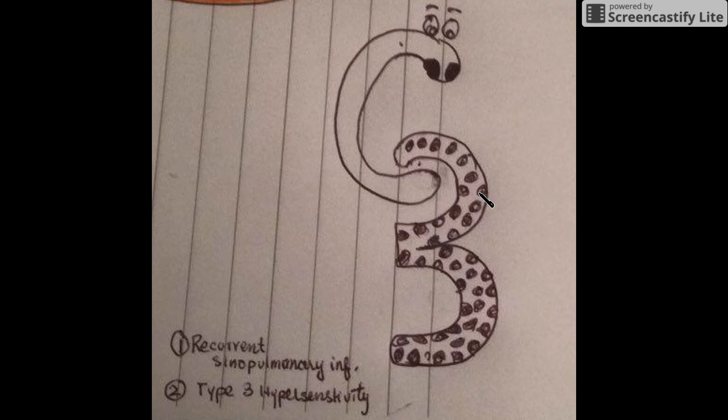You can see that I have made holes in the tree and it resembles the holes in the lungs. So recurrent sinopulmonary infection is shown by big nostrils and the holes in this digit 3.